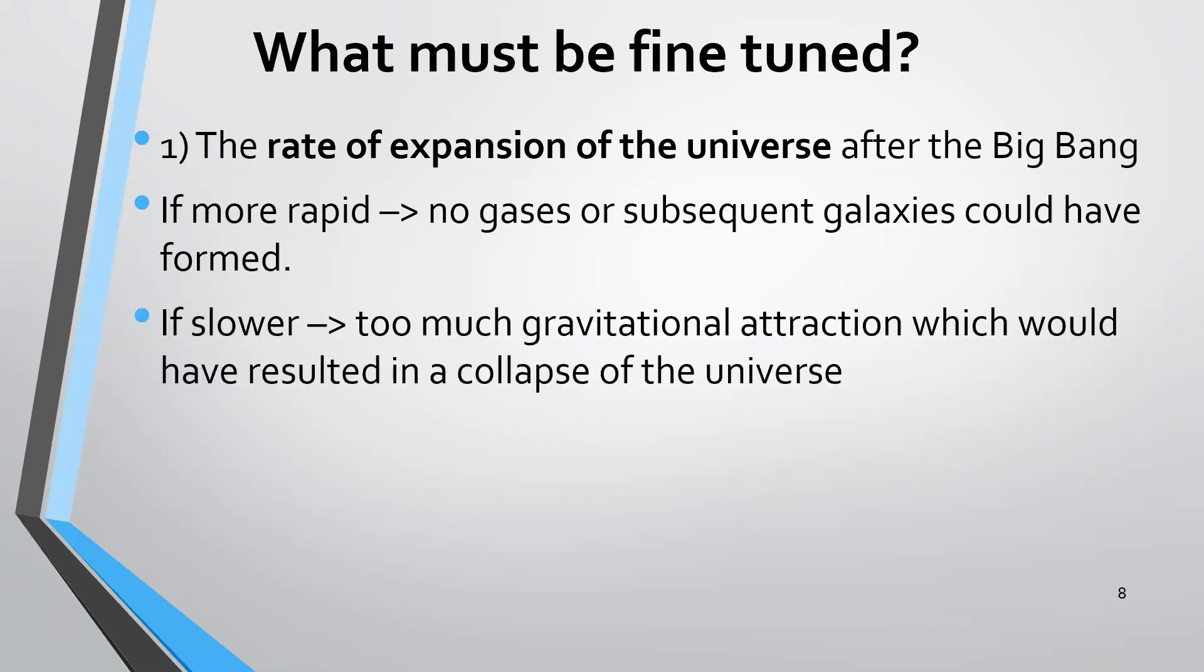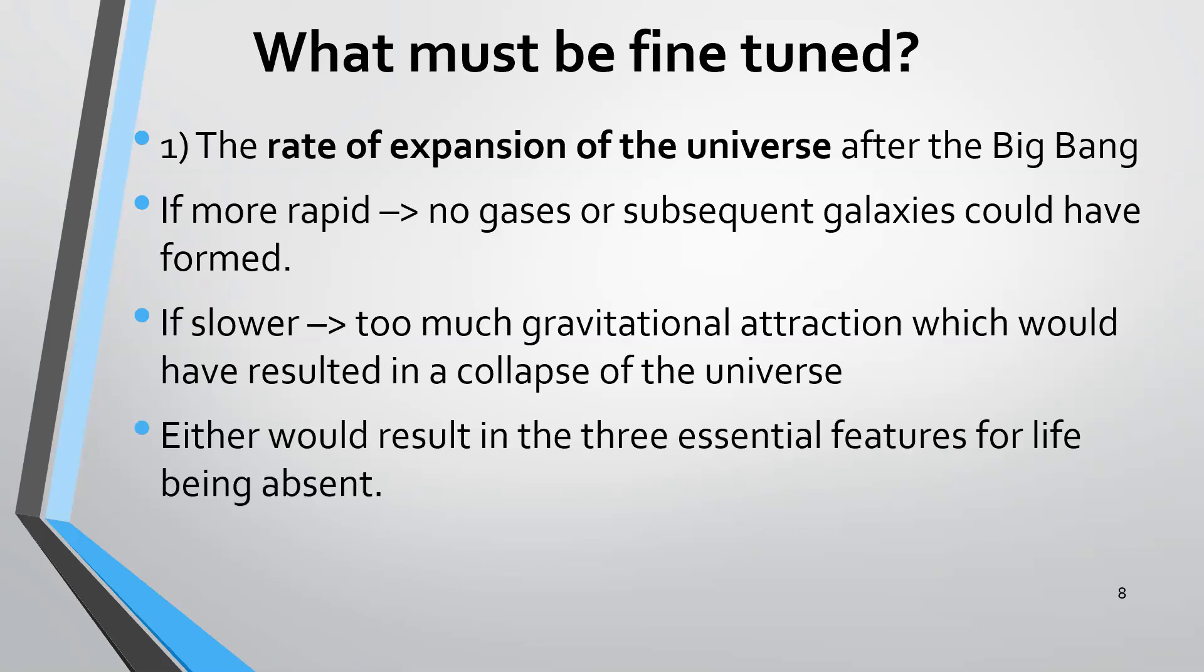If we went the other direction and the rate of expansion were slower, there would be too much gravitational attraction, and that would have meant that the universe would have collapsed into one big black hole. Either one of these would result in three essential features for life being absent, and so the rate of expansion of the universe had to be just right. It had to be finely tuned.